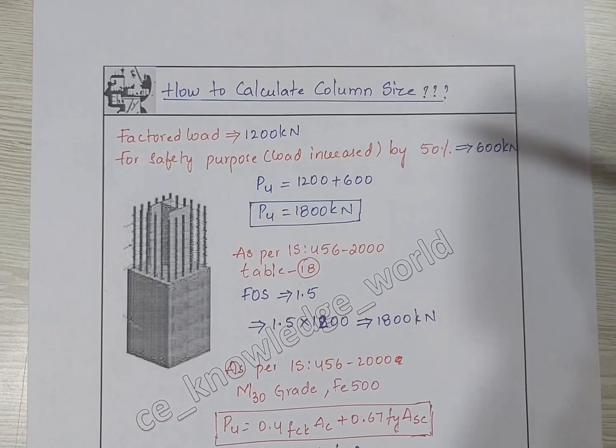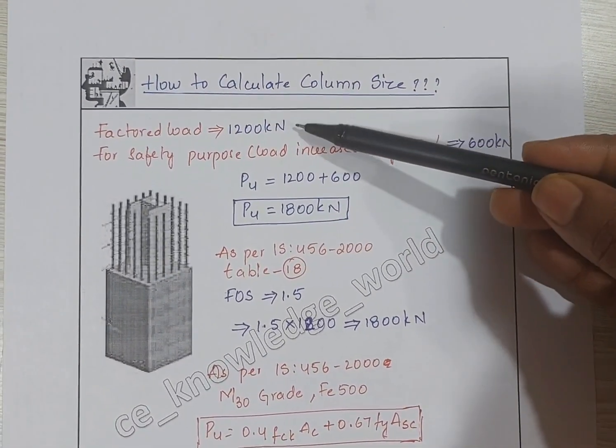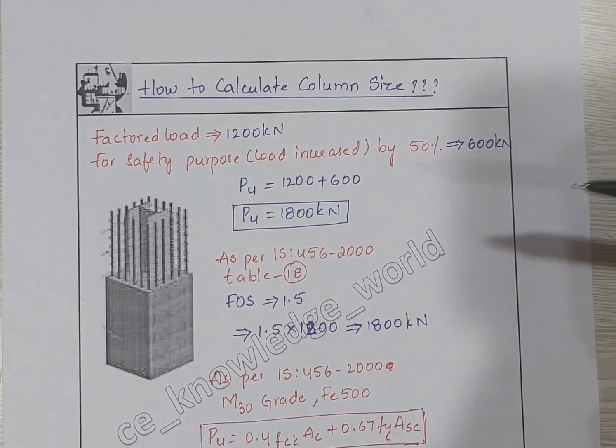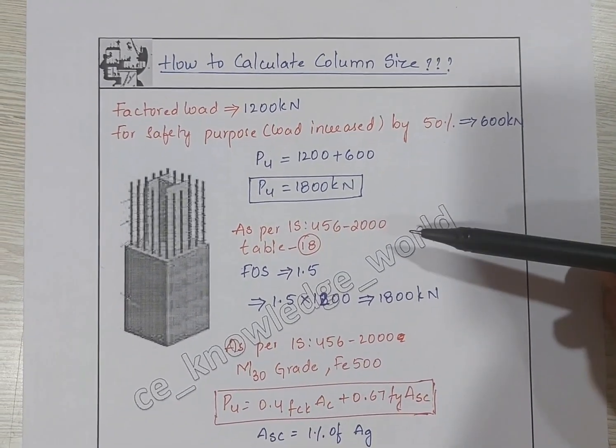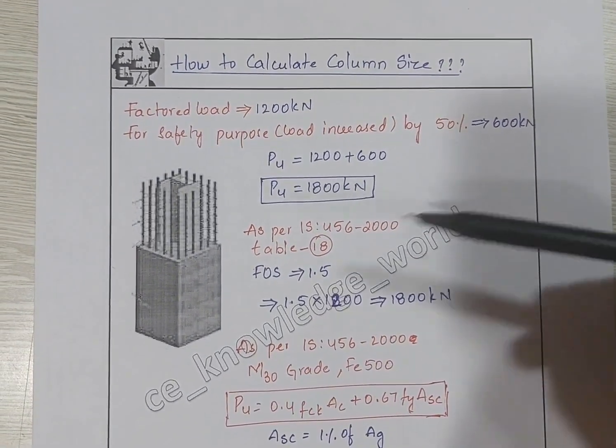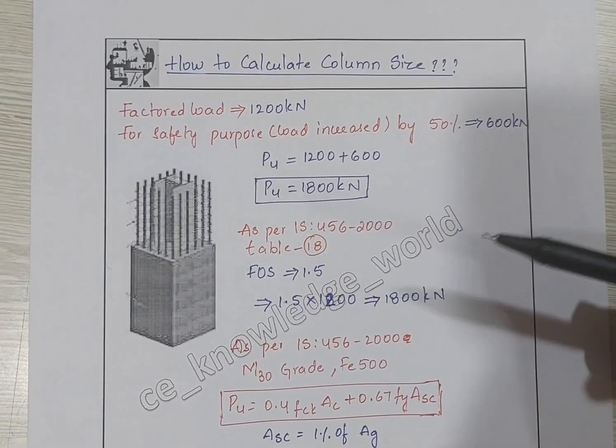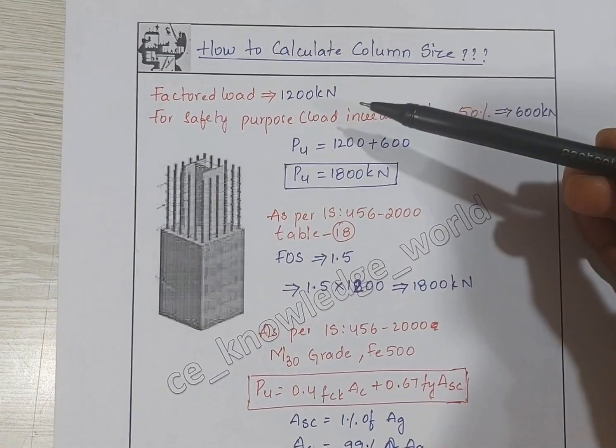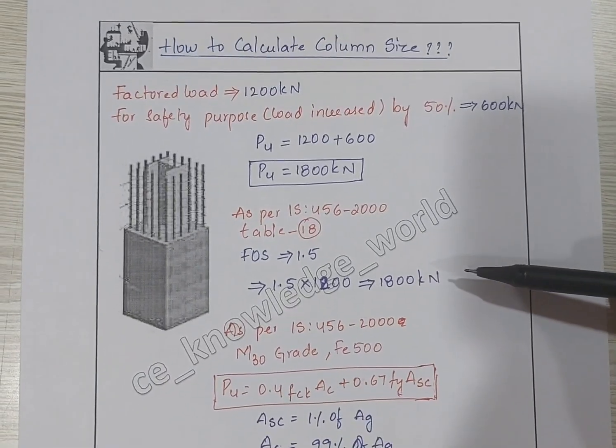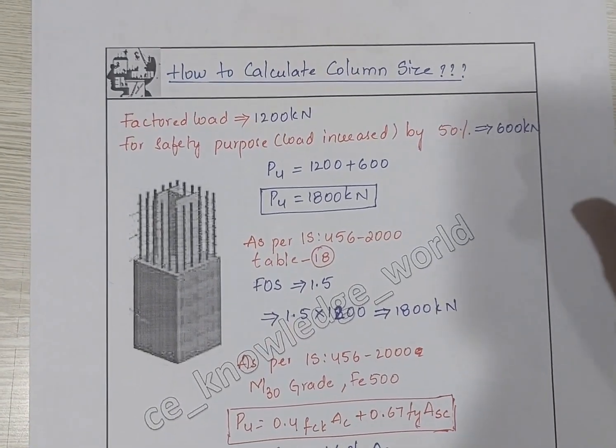Let us add these two loads: 1200 plus 600, the factored load equals 1800 kilonewtons. From IS 456-2000, table 18, the factor of safety we have to take is 1.5. So 1.5 into 1200 gives us 1800 kilonewtons. The assumption of 50 percent increase is correct.